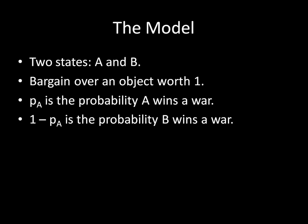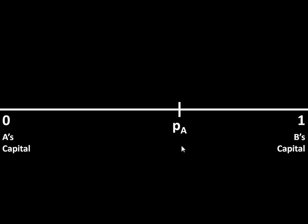Now, remember that PA is the probability that A wins the war. And because we don't have any draws in this model, one minus PA is the probability B wins the war. Because PA is a probability, PA must be between zero and one, so we can plot it on that number line. PA could actually be anywhere on this number line — it's a general statement. We're just putting it in one place to draw it, but we could move PA anywhere on the number line because PA could, in theory, be any number between zero and one.